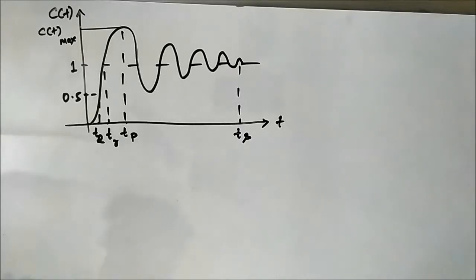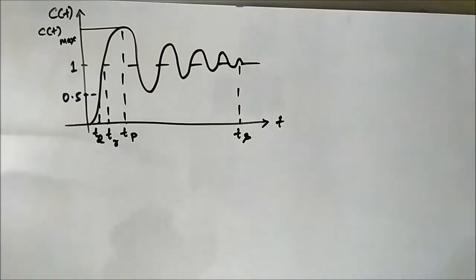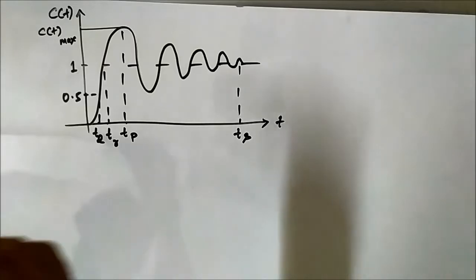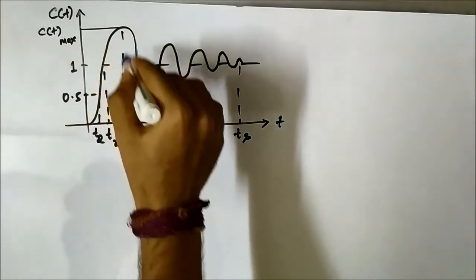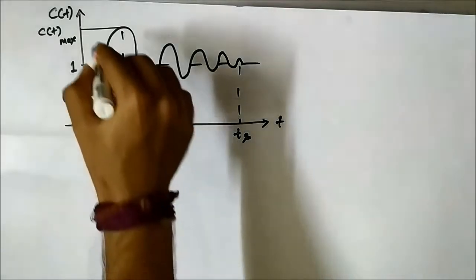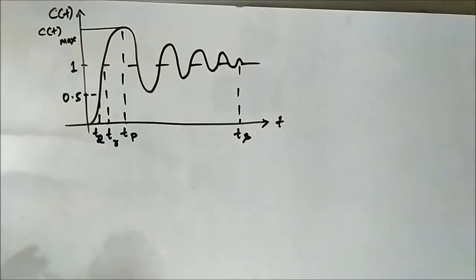Hello friends, welcome to Engineering Tutorial. In the previous video, we discussed the output response of a second order system to unit step input for the underdamped case — always remember this is a very important case. We found the mathematical expression for the time domain output and drew the output waveform. In that video we briefly evaluated four or five important parameters.